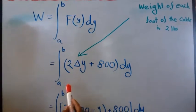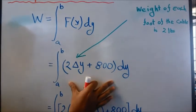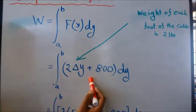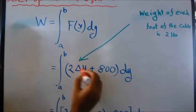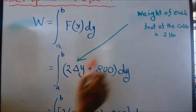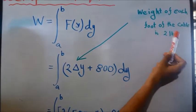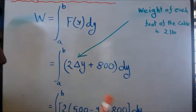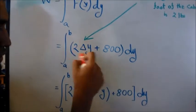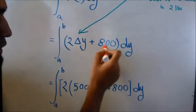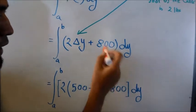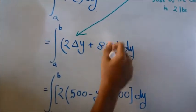From here we break down the force into 2 times delta Y plus 800 delta Y, because weight of each foot of cable is 2 pounds and the height is changing, plus 800 is the weight of the bucket which is constant, so there's no variable.